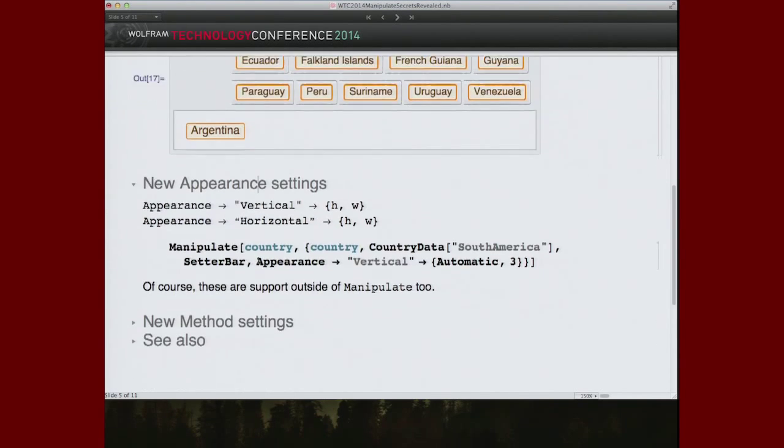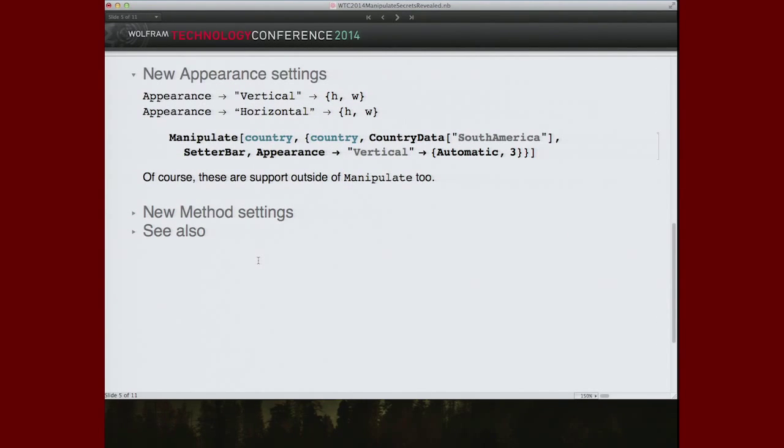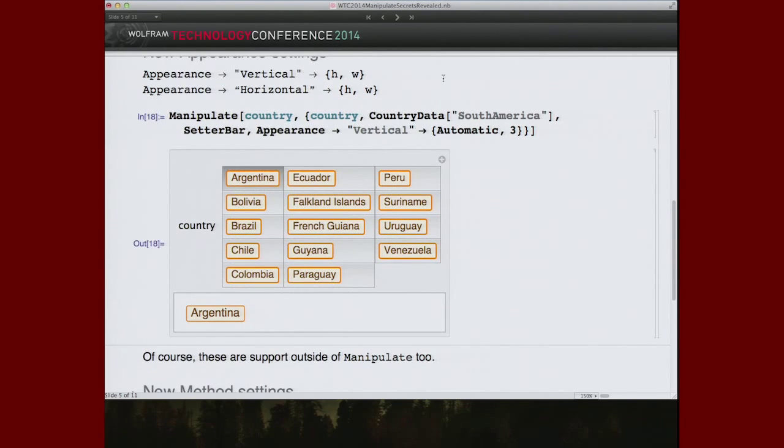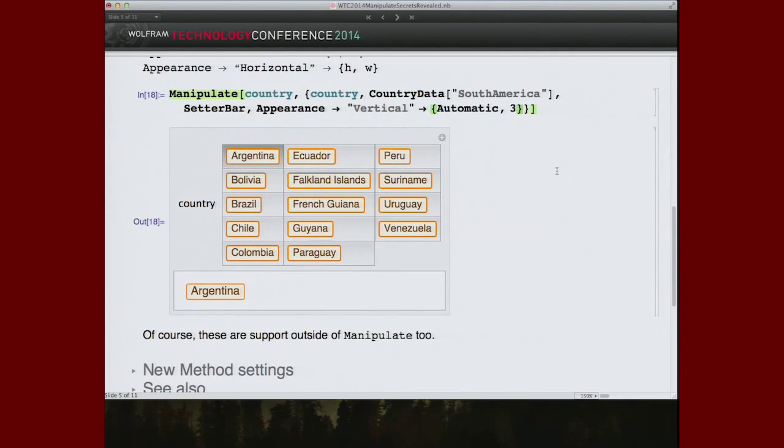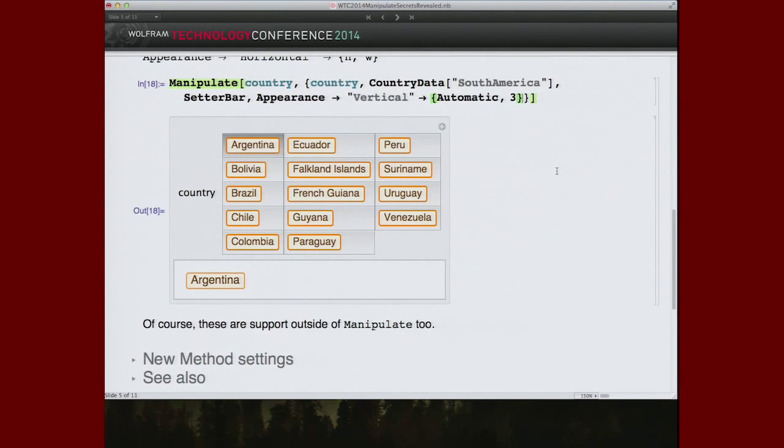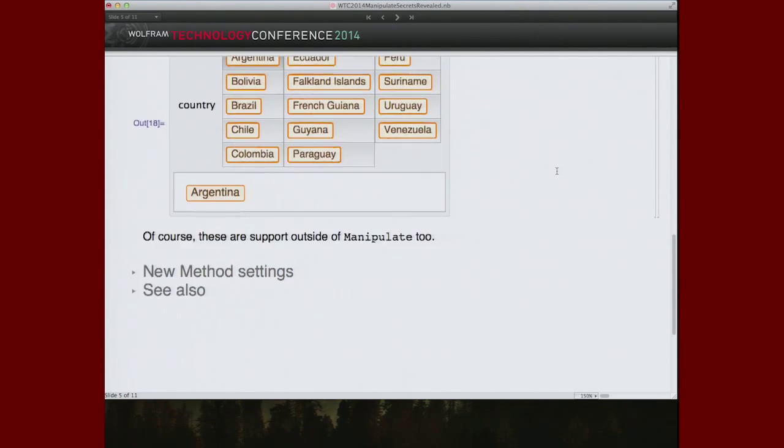Now, we do have that ability. We have, instead of just appearance row horizontal vertical, we have appearance vertical dimensions and appearance horizontal dimensions that lets you specify, I want these things arranged in columns and I want there to be three columns and however many rows it takes. This works for all of the bar functions. It works outside of manipulate as well, but I think this is a very nice adjustment to those sets of functions.